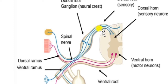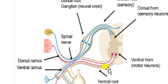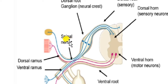The dorsal root, after emerging from the spinal cord, forms a ganglion known as the dorsal root ganglion. The ganglion is absent in the ventral root region. These two branches — the dorsal root and the ventral root — unite to form a spinal nerve before they emerge out from the intervertebral foramina.